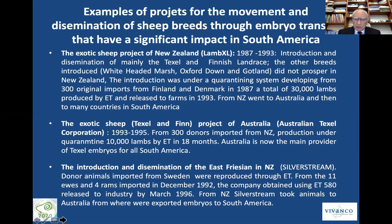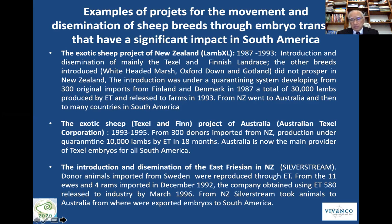The other project, a very large project, was the exotic sheep project for Texel and Finnish Landrace in Australia, made by the Australian Texel Corporation from 1993 to 1995. From 300 donors imported from New Zealand, under a quarantine system, we produced more than 10,000 lambs by embryo transfer in 18 months of operation. Australia is now the main provider of Texel embryos for South America.